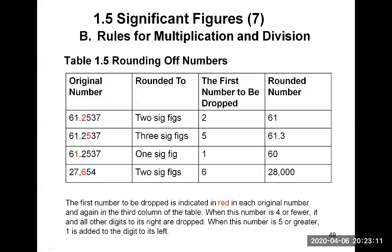For the same number rounded to one significant figure, we keep the 6 — that's one sig fig. What comes after the 6 is a 1, so we round down and the 6 stays a 6. However, since the original number was 61 and not just 6, we need a 0 as a placeholder to show it's in the 60s. So the answer is 60, with no decimal point, which has only one significant figure.